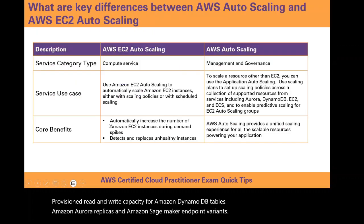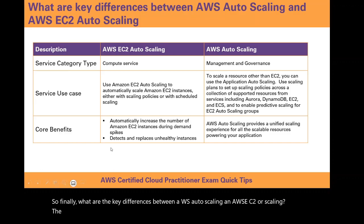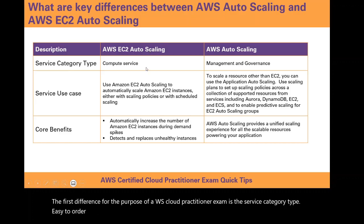So finally, what are the key differences between AWS autoscaling and AWS EC2 autoscaling? The first difference, for the purpose of the AWS Cloud Practitioner Exam, is the service category type. EC2 autoscaling falls under compute services, whereas AWS autoscaling falls under management and governance.